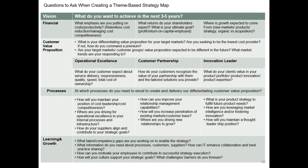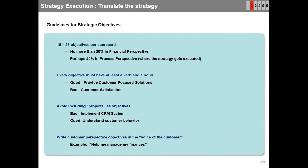The guidelines for strategic objectives: 15 to 25 objectives per scorecard, no more than 20% in the financial perspective, and perhaps 40% in the process perspective where the strategy gets executed. Every objective must have at least a verb and a noun — good example: 'provide customer-focused solutions'; bad example: 'customer satisfaction'. Avoid including projects as objectives — bad: 'implement CRM system'; good: 'understand customer behavior'.